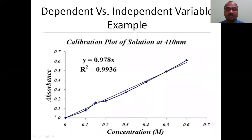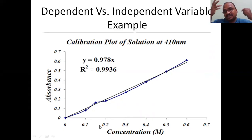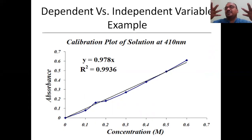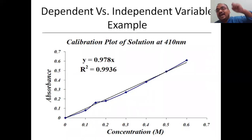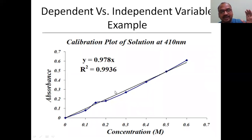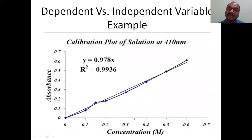Before seeing that, we need to know dependent and independent variables. The x-axis is always the independent variable — it doesn't depend on anything. For example, concentration: I may take 10%, 20%, 30%, 40%. That is my choice — it is independent. The absorbance of a sample depends on the concentration: higher concentration gives higher absorbance. So absorbance is the dependent variable on the y-axis, dependent on the x-axis.